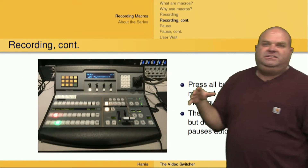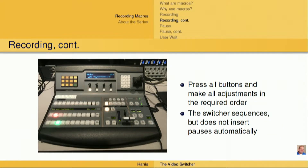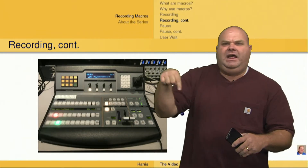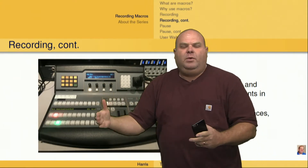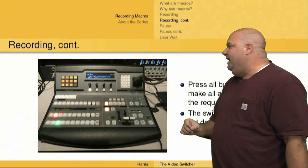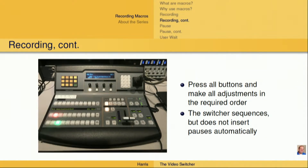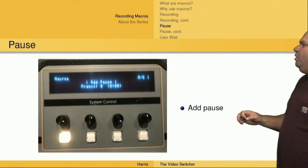In other words, every button push and every dial change you make is essentially going to happen in real time, unless you tell the switcher to pause or to wait for user input. This can be very confusing for new people — they may think that pushing the preview button and then waiting 10 seconds before pushing the cut button means the macro will wait those 10 seconds. Well, unless we insert that pause as part of our macro setting, the switcher is just going to push preview and then push the cut button almost instantaneously, essentially within one frame. So we need to add those pauses if we want them to be there.